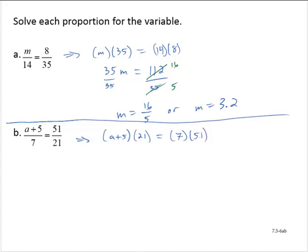Applying the distributive property on the left-hand side gives 21A plus 105. Multiplying on the right-hand side gives 357. I will subtract the 105 from both sides, yielding 21A is equal to 252.